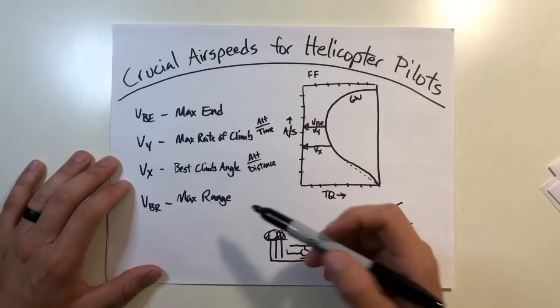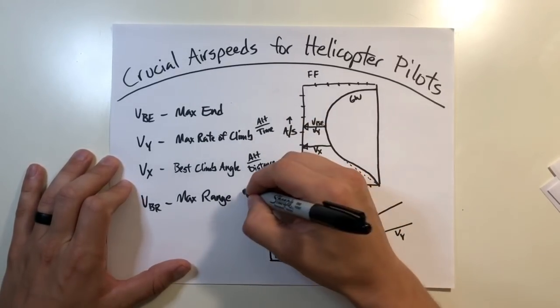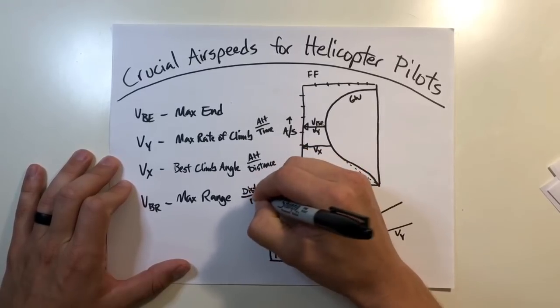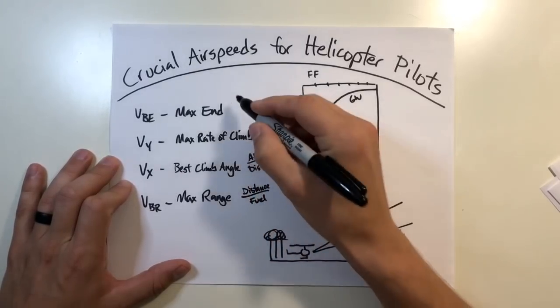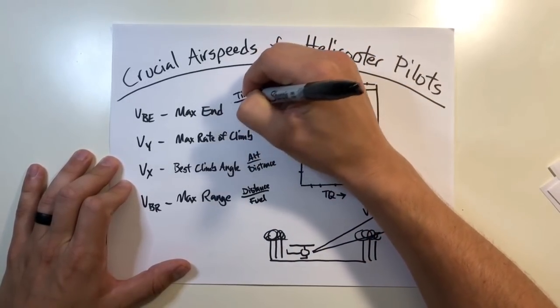But the difference here, we talked about fuel efficiency, is that max range is going to be based on giving you greatest distance per unit of fuel, whereas this up here is giving you your best time per unit of fuel.